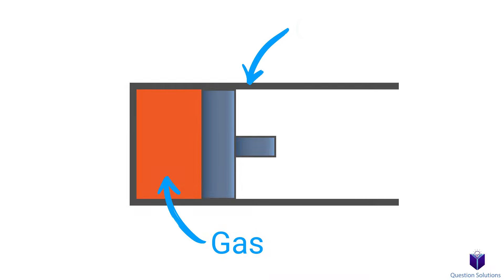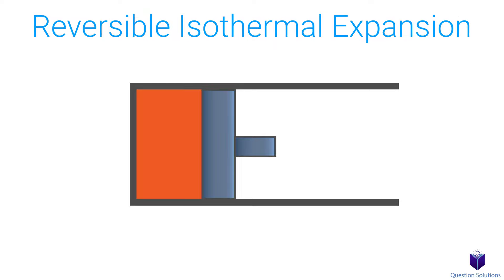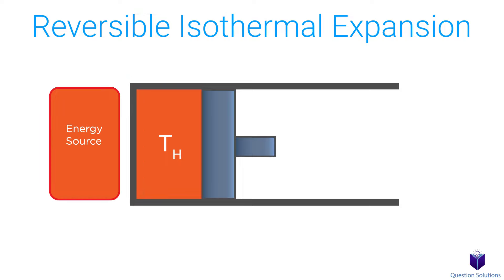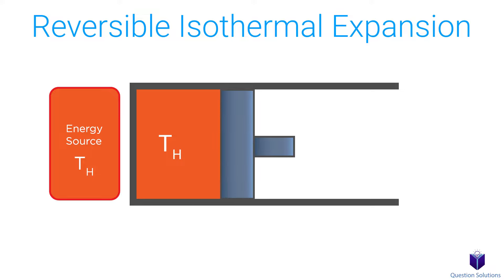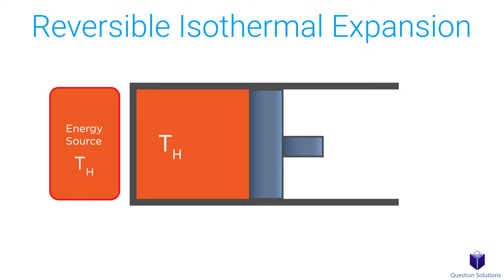Imagine we have a closed system with a gas inside a piston-cylinder device. The first step of the cycle is the reversible isothermal expansion. The temperature of the gas is labeled TH. The cylinder head is in close contact with an energy source that also has a temperature of TH, so the gas and the energy source are at the same temperature. The gas is allowed to expand, doing work on the surroundings — the piston moves to the right. As the gas expands, its temperature begins to decrease, but heat is transferred from the energy source back into the gas, keeping the gas temperature constant at TH. Because the temperature difference between the energy source and the gas never changes more than an infinitesimal amount, this is a reversible heat transfer process. The total heat transferred during this step is labeled QH.